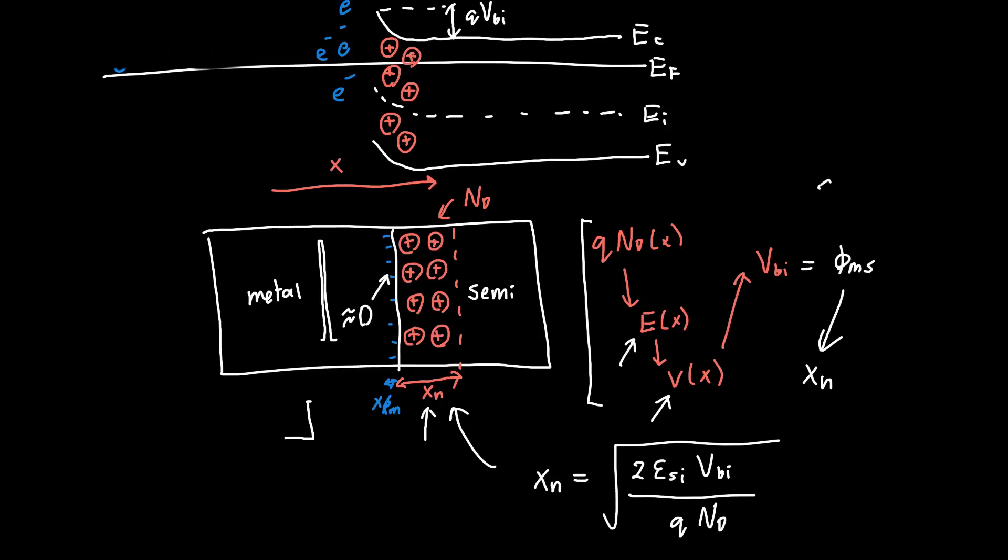So the voltage drop is almost entirely over the depletion region in the semiconductor. We still have charge neutrality, it's just that these carriers are so scrunched up, their density is so high that the width of the depletion region within the metal is essentially negligible. This is the same as a P+ N diode. You'll get the same exact result for the depletion region width.